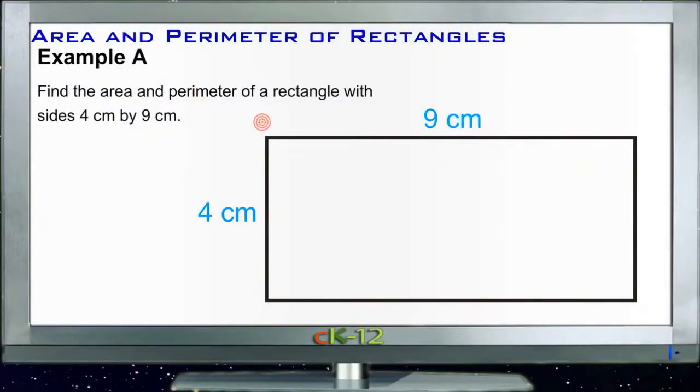Example A says find the area and perimeter of a rectangle with sides that are 4 centimeters by 9 centimeters. Now because this thing is laid out the long way, I'm going to call the 9 centimeter side our base, since usually things sit on their base. And then we'll call the 4 centimeters the height.